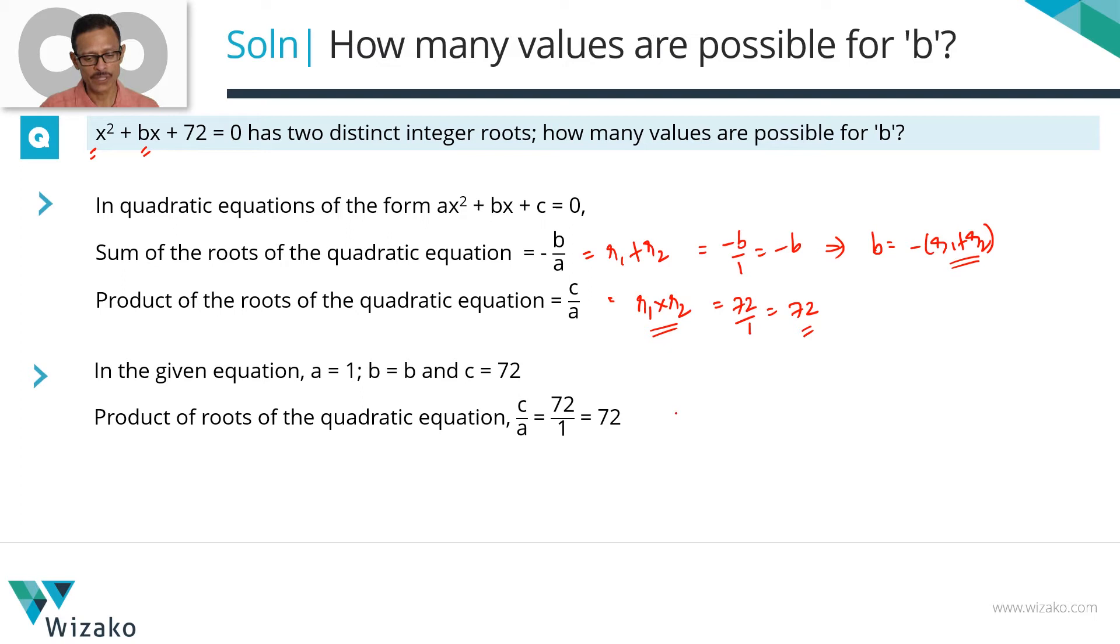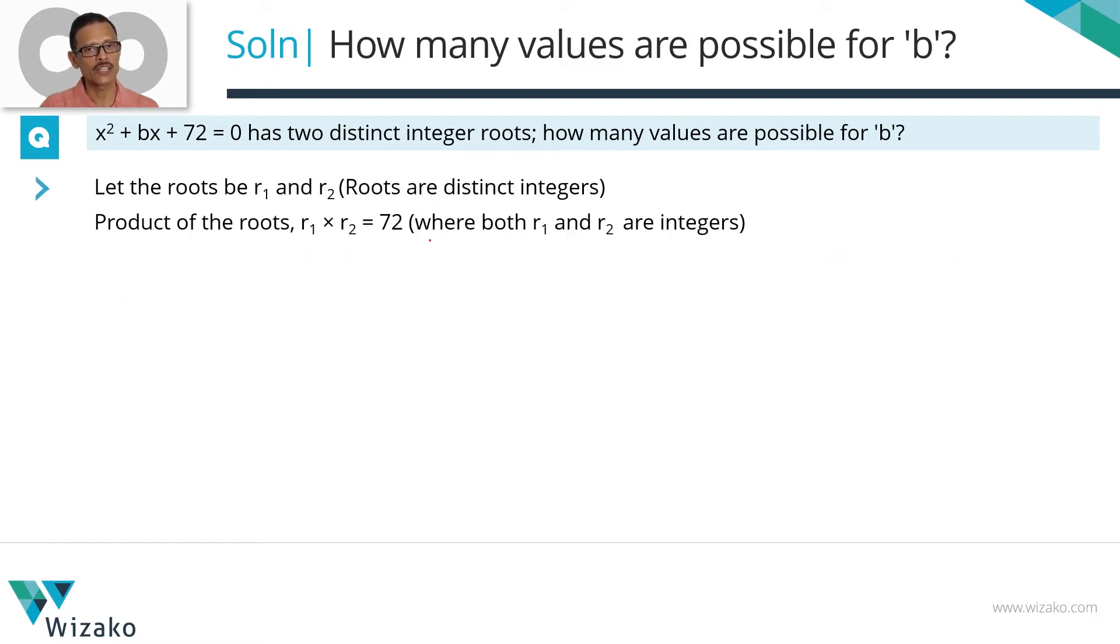From that, we will be able to deduce what are all possible values for r1 plus r2. The moment we get possible values for r1 plus r2, we will get possible values for b. Product of the roots we've computed equals 72. Sum of the roots equals minus b. So the number of values that b takes will be the number of values that minus of r1 plus r2 can take. We know the roots are integers, distinct integers, and the product of those two integers equals 72. All that is left in method 1 is finding in how many ways can we express 72 as a product of two distinct integers.